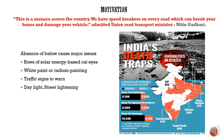The transport minister himself admitted this is a maintenance issue in the country — we have speed breakers on every road which can break your bones and damage your vehicle. This shows the severity of the problem existing in India. According to statistics, the total deaths in India due to potholes and speed breakers are more than the total accidents in a year in the UK. The major issues causing these accidents are the absence of solar cat eyes, white or radium paint markings, and traffic signs to warn road users, as well as the absence of daylight and street lighting.